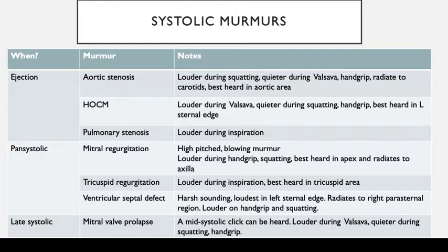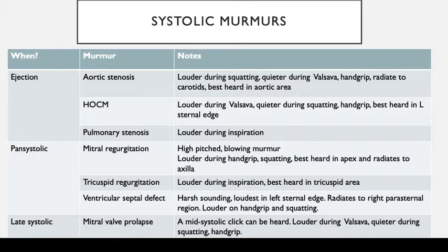For pansystolic murmurs, we have mitral regurgitation — usually called a blowing murmur. It's heard at the apex and can radiate to the axilla, and it's louder during hand grip and squatting. For tricuspid regurgitation, again this is a right heart valve murmur, so it's louder during inspiration. Ventricular septal defect is a harsh-sounding pansystolic murmur that is loudest at the left sternal edge and can radiate to the right parasternal region, and again hand grip and squatting can make it louder.